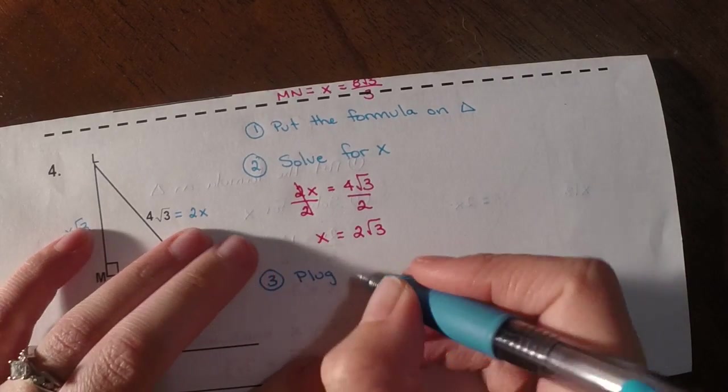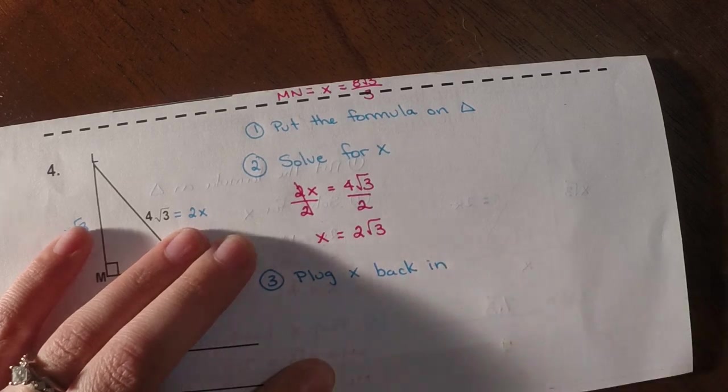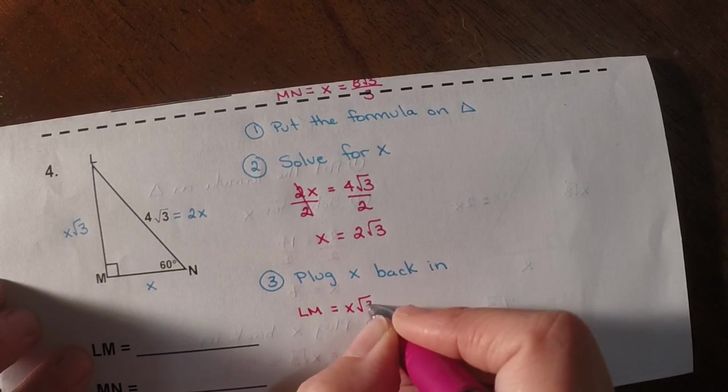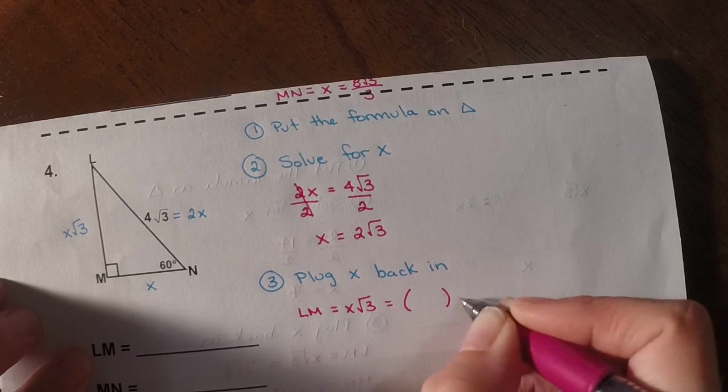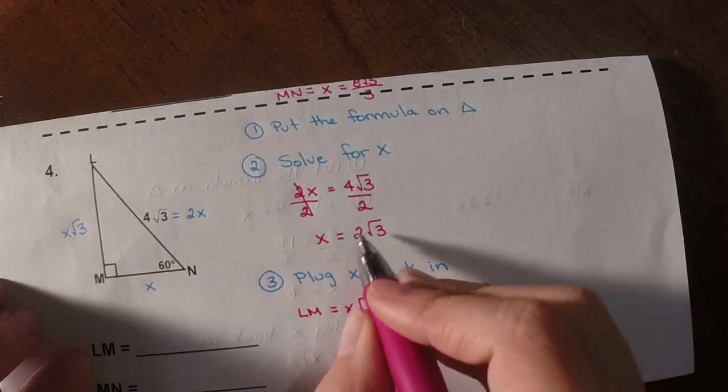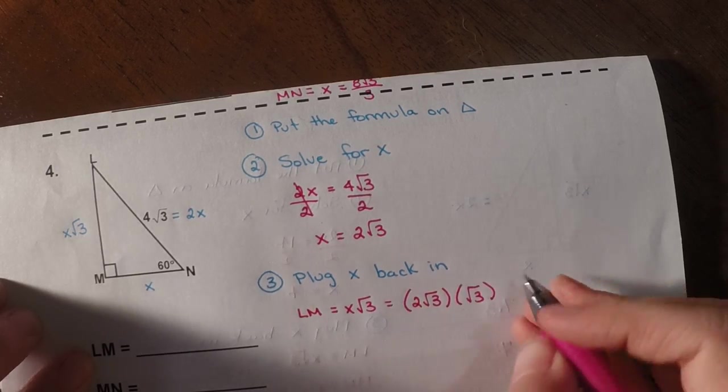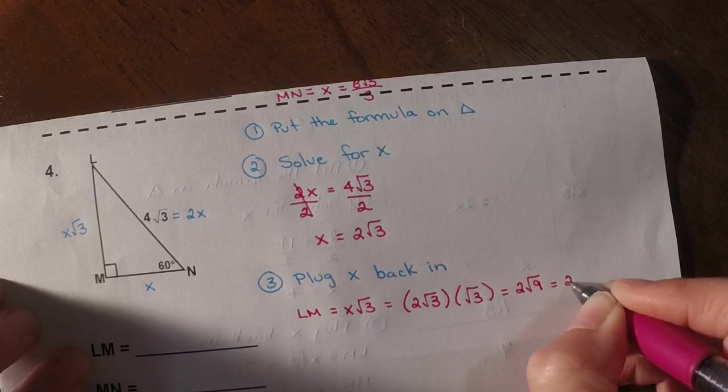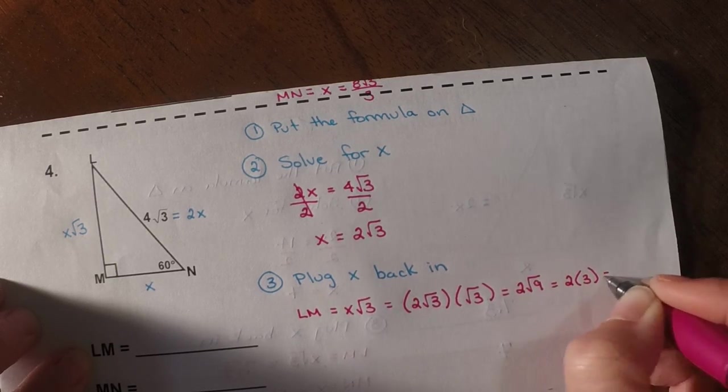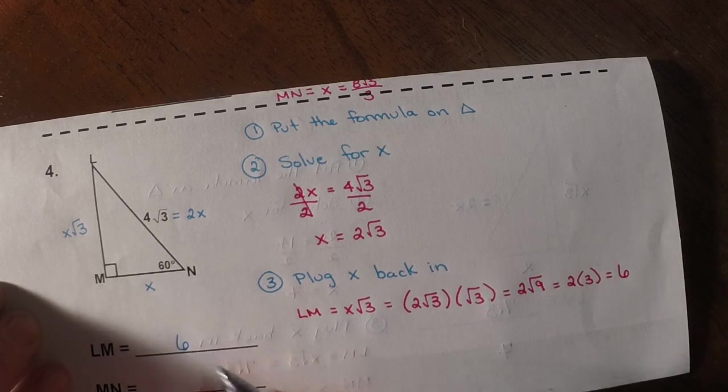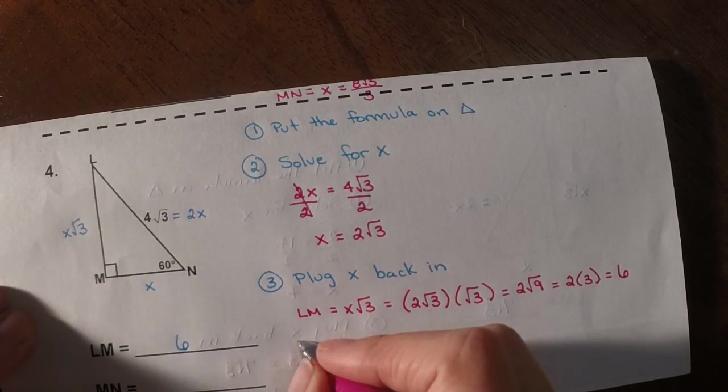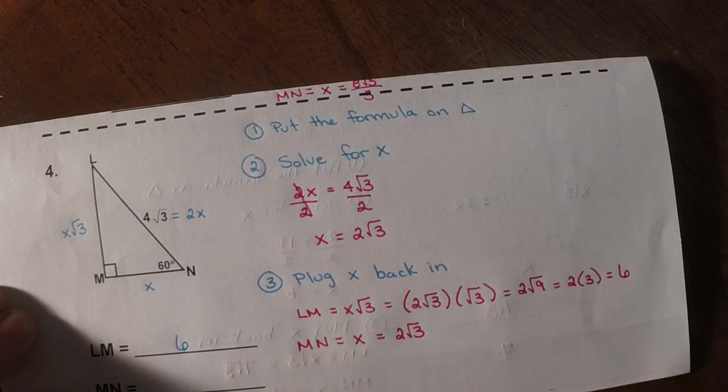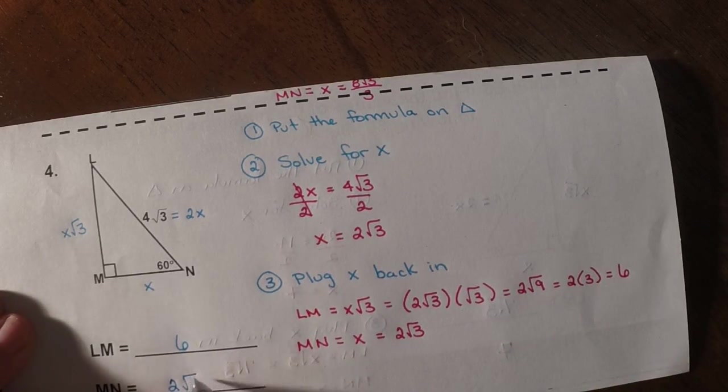Try this again. So plug x back in. So LM, looking over here, is x root 3. So remember, that means I'm multiplying whatever x is times root 3. Well, x is 2 root 3. So then that gives me 2 square roots of 9. Well, I can take the square root of 9. It's 3. So that's 2 times 3, which is 6. So LM is 6. And then MN is just x. Well, x is 2 root 3. So MN is 2 root 3.